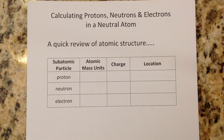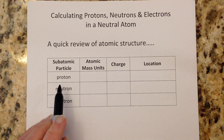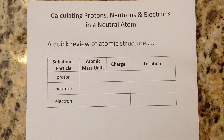A quick review of atomic structure just in case you've not had this in a while. There are three subatomic particles in the atom: protons, neutrons, and electrons. When you hear the term subatomic particle, that's what we are referring to.